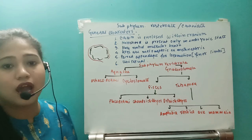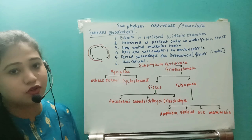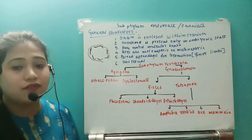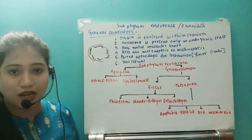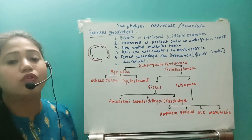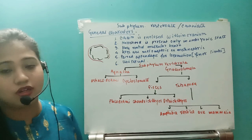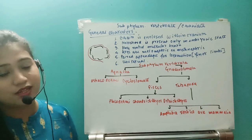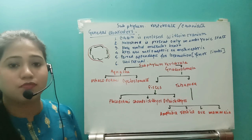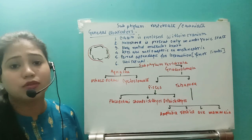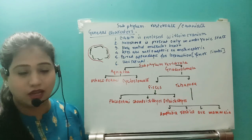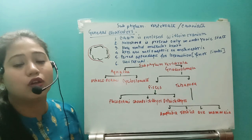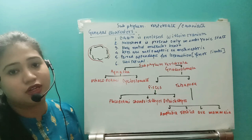Next, let us see the notochord. All vertebrates are chordates but all chordates are not vertebrates. Notochord was present in Urochordata and Cephalochordata, but in Vertebrata the notochord is present only in the embryonic state. After birth, the notochord is replaced by a cartilaginous structure — the vertebral column — which encloses the spinal cord, divided into pieces called vertebrae, with spinal accessory nerves arising from the intervertebral spaces.